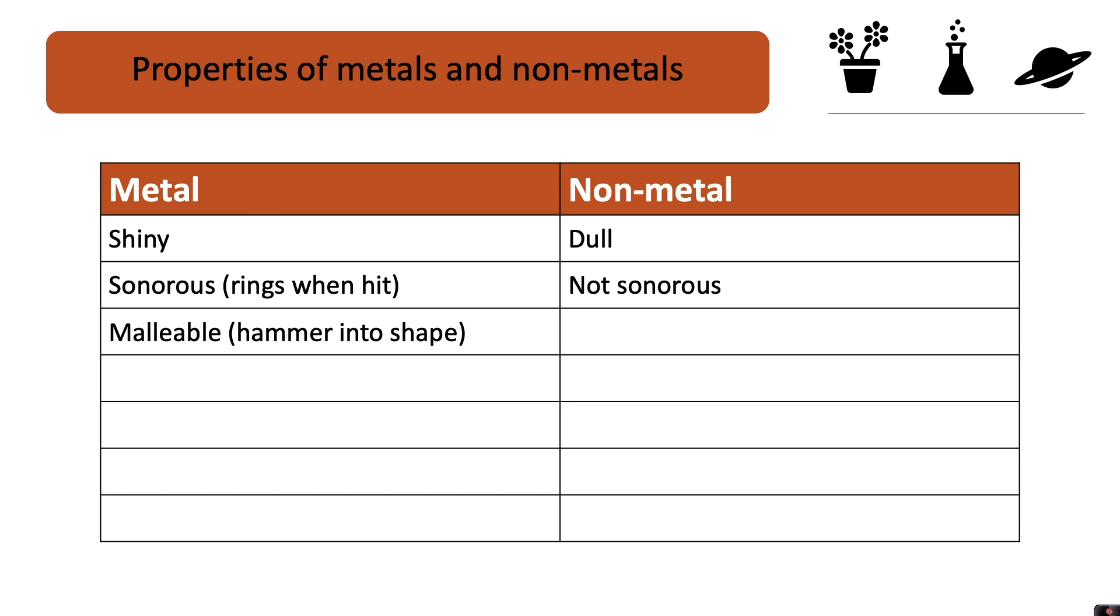Metals are malleable. This means that you can hammer them into different shapes. However, non-metals are brittle. If you were to hammer a non-metal, it would just break apart.